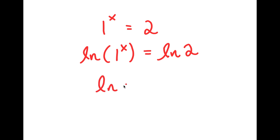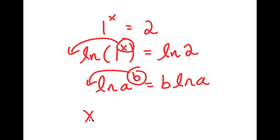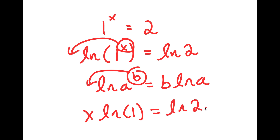Now if I have something in the form ln a to the power of b, I can move this exponent b to the front, so I get b times ln a. So in this case, I have ln 1 to the power of x, and I can move x to the front. So I get x times ln 1 is equal to ln 2.